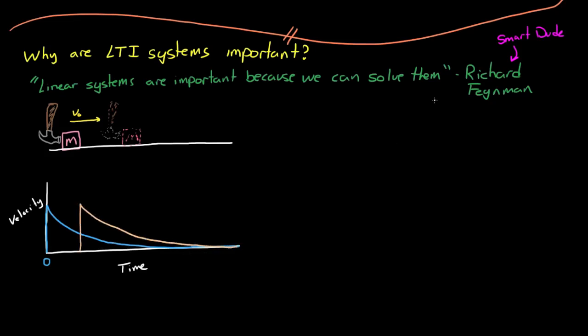Also, because of the principle of homogeneity, we know that if we hit the mass twice as hard, then we would expect a response that was twice as large. And now, finally, because of the principle of superposition, the full response of the system would just be the summation of both signals. In this case, it's the thick yellow line.